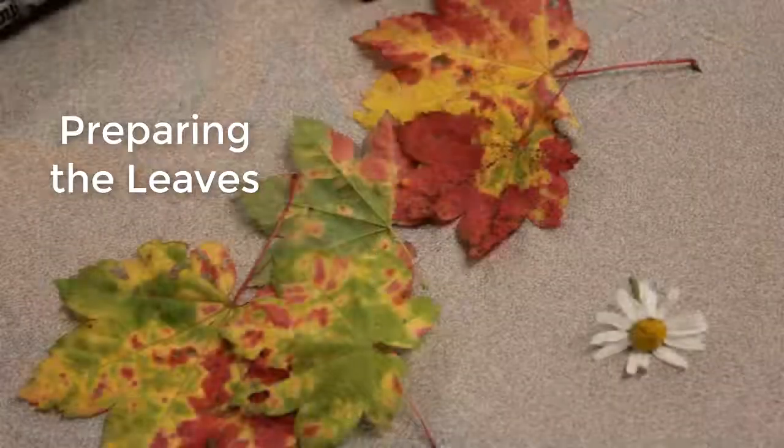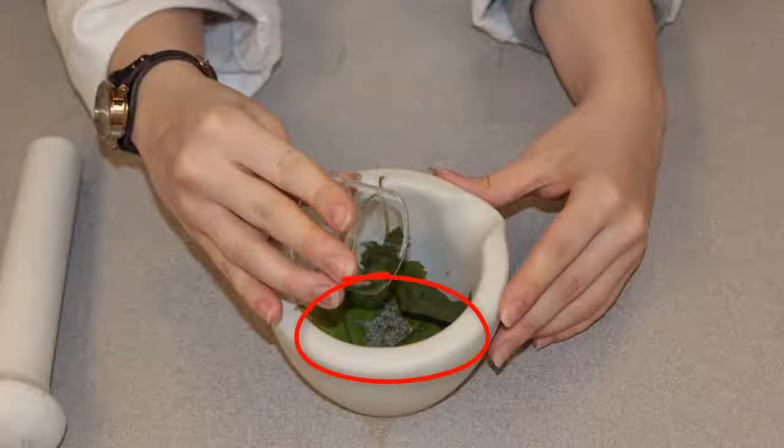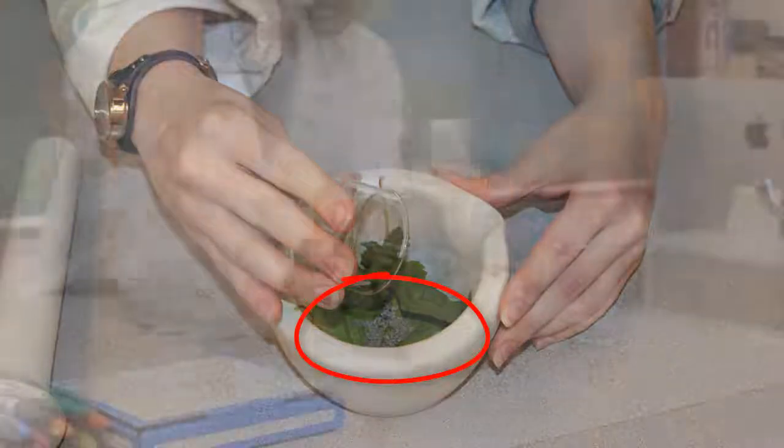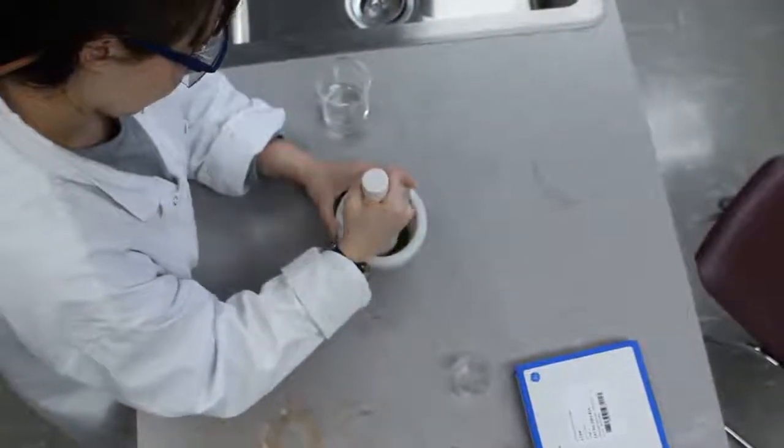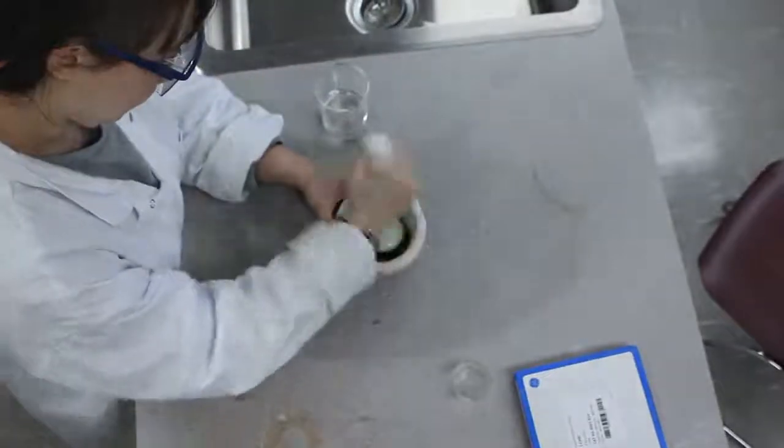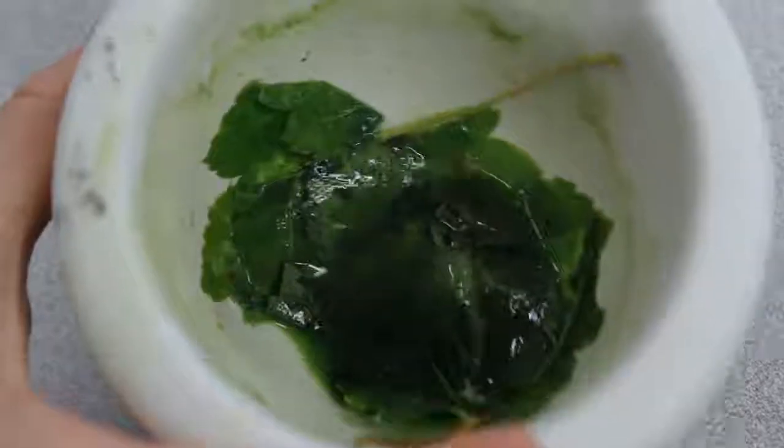Now it's time to prepare the leaves you're going to be separating the pigment from. Add your leaves to your mortar and pestle along with a little bit of sand for grinding and cover the mixture with a bit of acetone just to make the whole thing moist. Grind with your mortar and pestle for about 10 to 20 minutes until you have a concentrated solution of your plant pigments. The longer you can grind, the better solution you'll get.